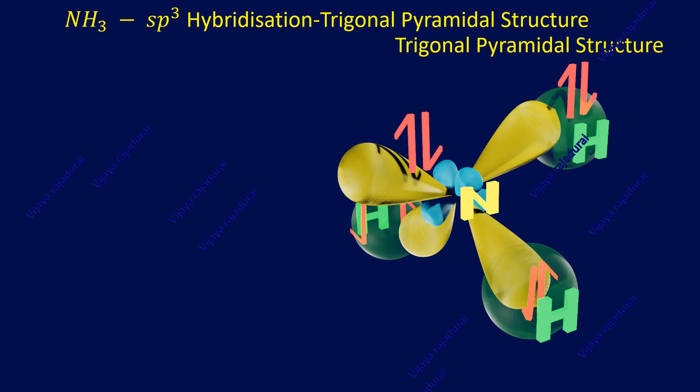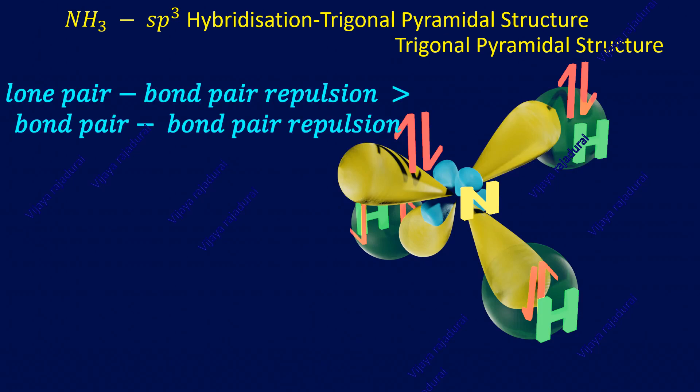We thought that sp³ hybridization gives tetrahedral. In ammonia molecule, the hybridization is sp³ but the structure is not tetrahedral because of the presence of lone pair of electrons on nitrogen atom. Here, lone pair bond pair repulsion is greater than bond pair bond pair repulsion.